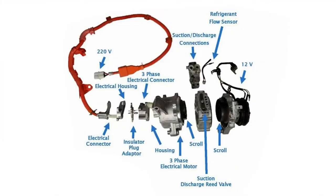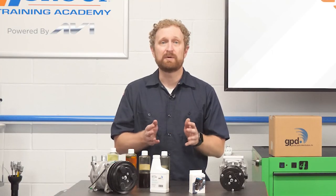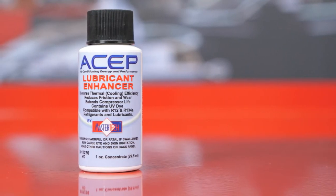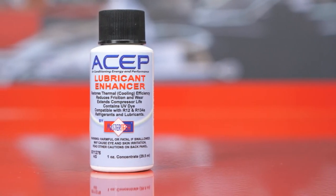It's also imperative to use the correct oil. Hybrid scroll compressors, for example, like you might find on a Toyota Prius, require a specific type of oil with high dielectric properties. Using PAG oil on a hybrid compressor will cause the unit to fail and cause serious damage to the electrical system.